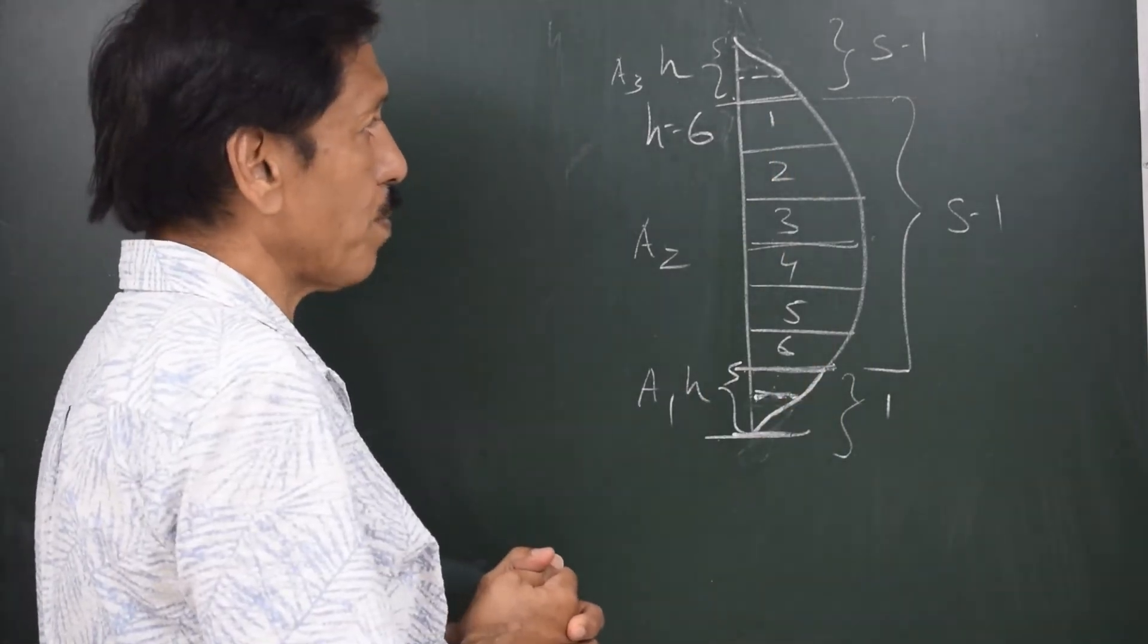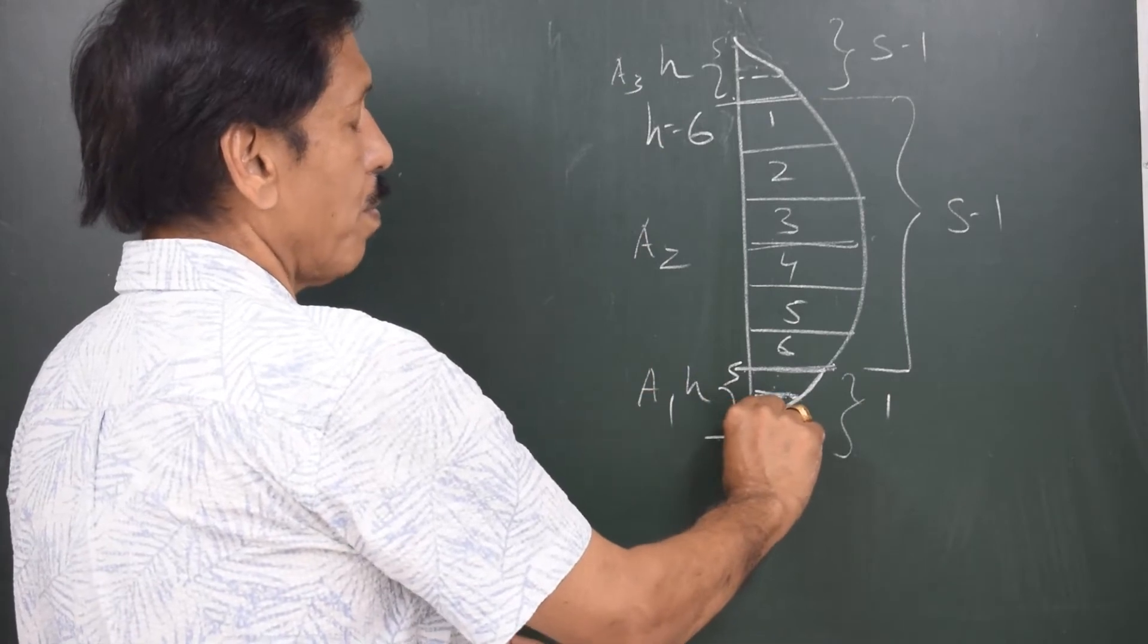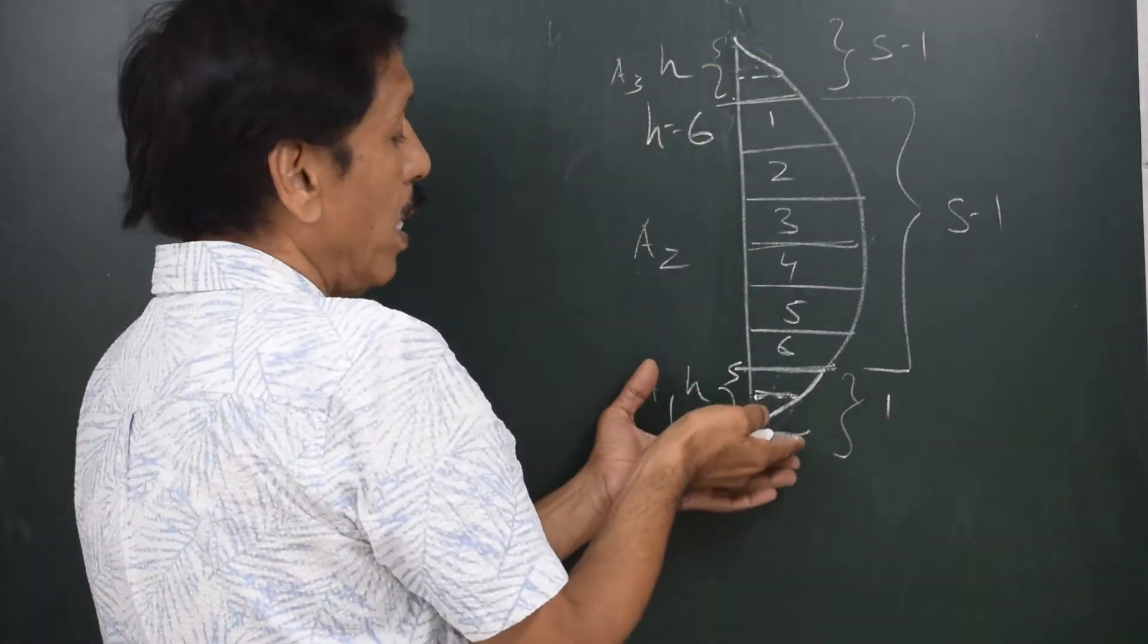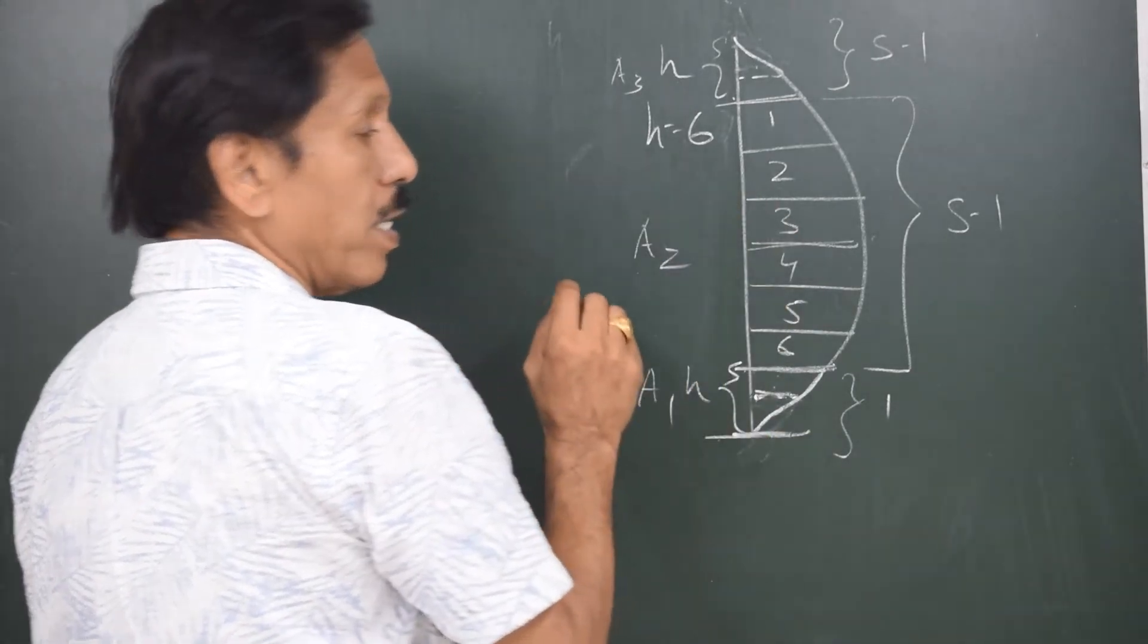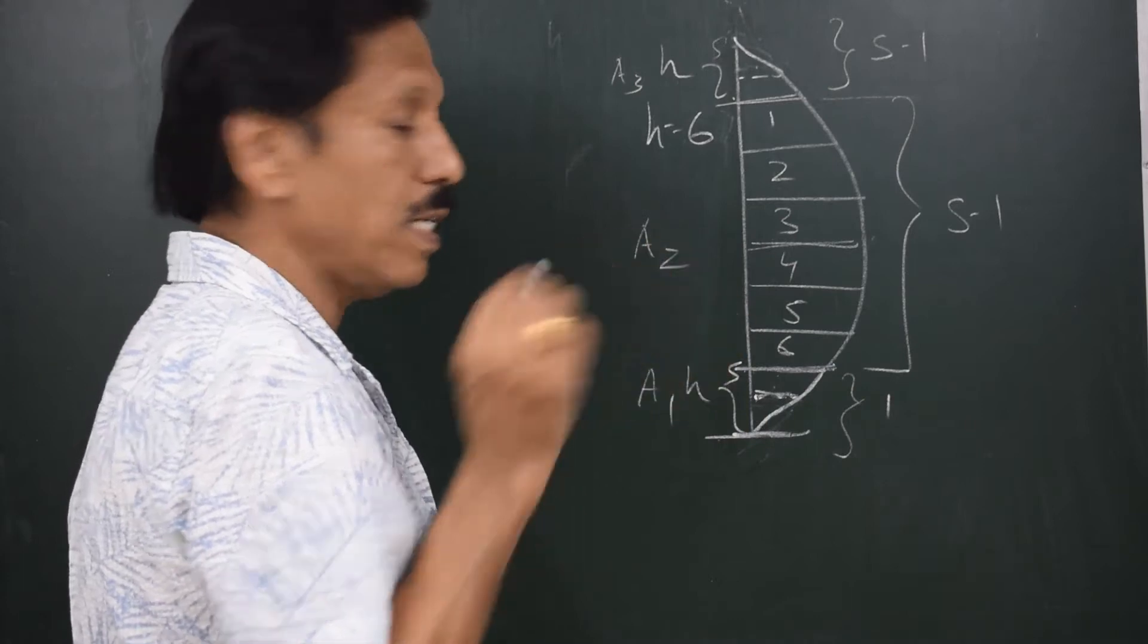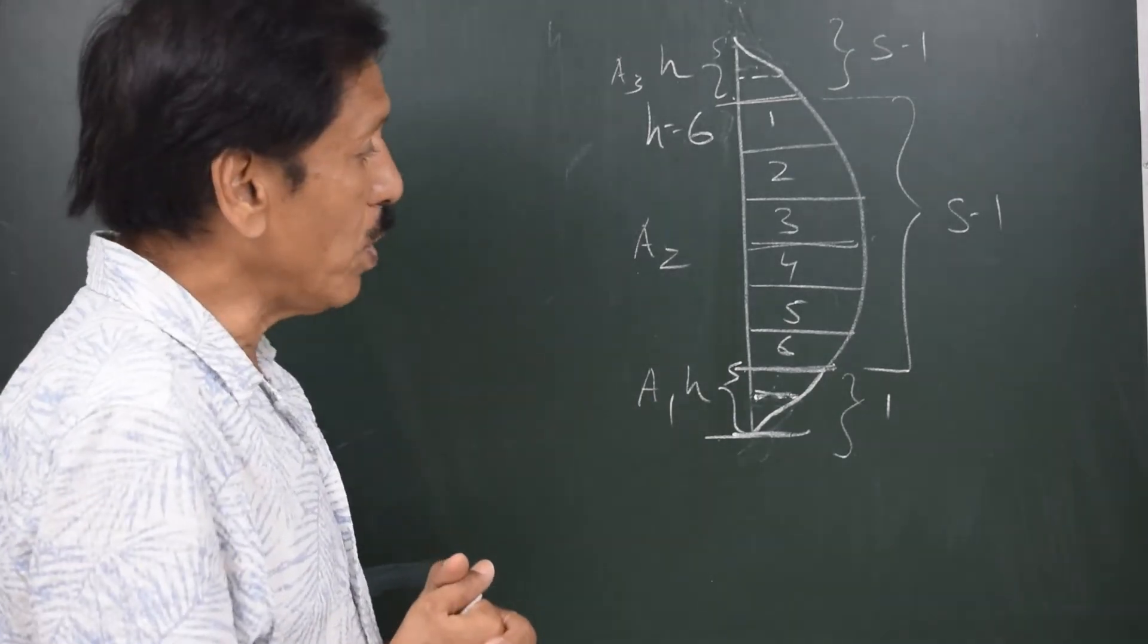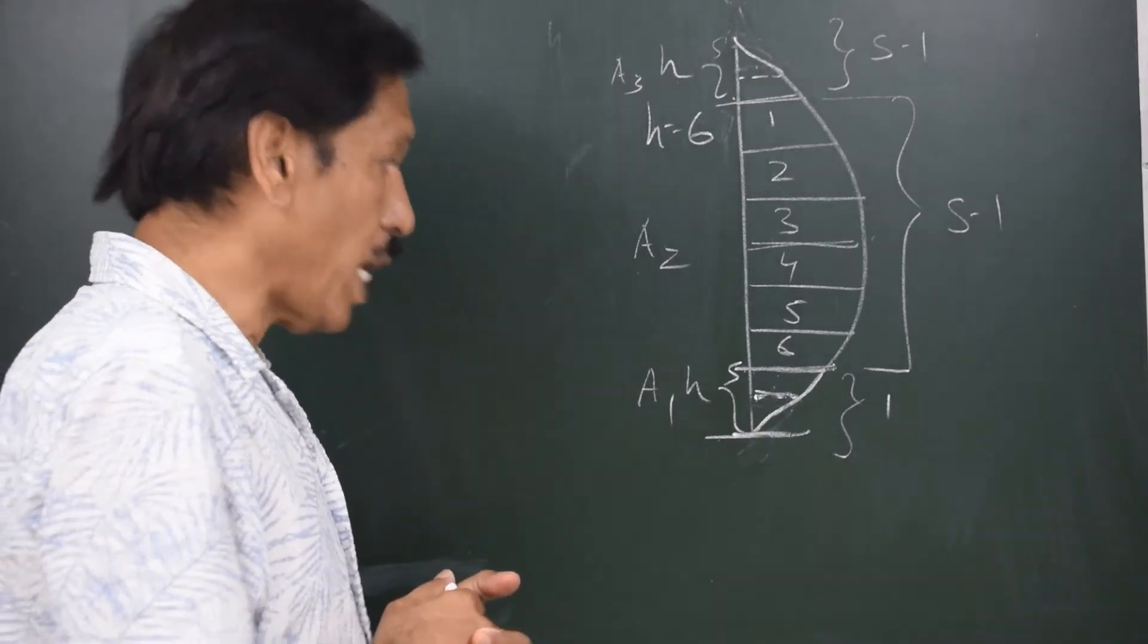And we can find out the individual centroid of these three areas with respect to their respective first ordinate. And after that, we can take the moment about the same reference level using a one d one plus a two d two plus a three d three divided by a one plus a two plus a three, but this will involve lot of calculation. What we want to do is basically in one table finish the entire calculation. So how do we do that?